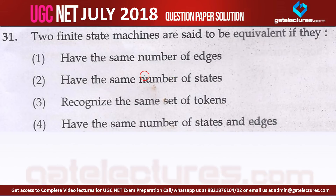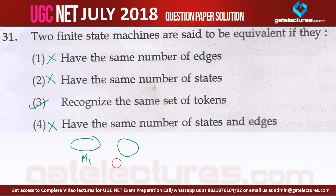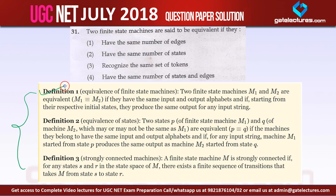Question 31: Two finite state machines are said to be equivalent. Options like 'same number of edges,' 'same number of states,' or 'same number of states and edges' are all wrong — these don't guarantee the machines accept the same language. Two FSMs are equivalent only if they recognize the same set of tokens, so the answer is option 3.